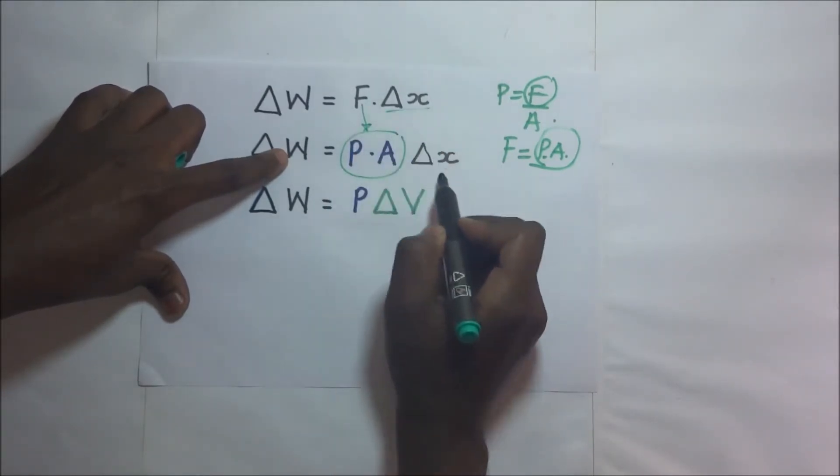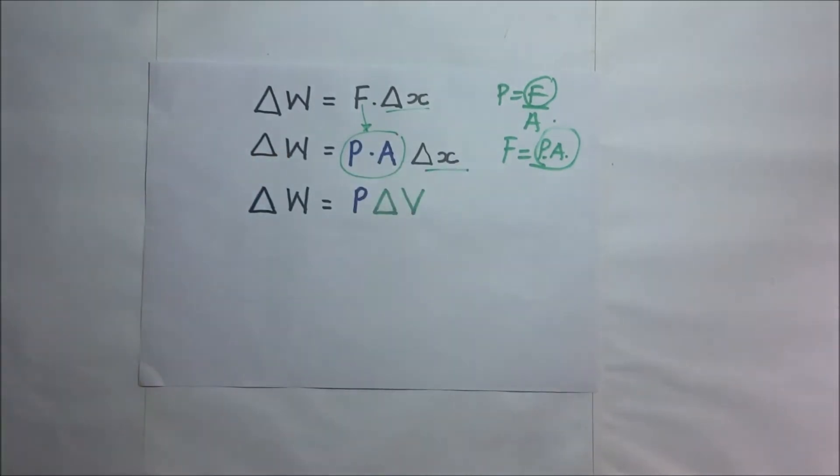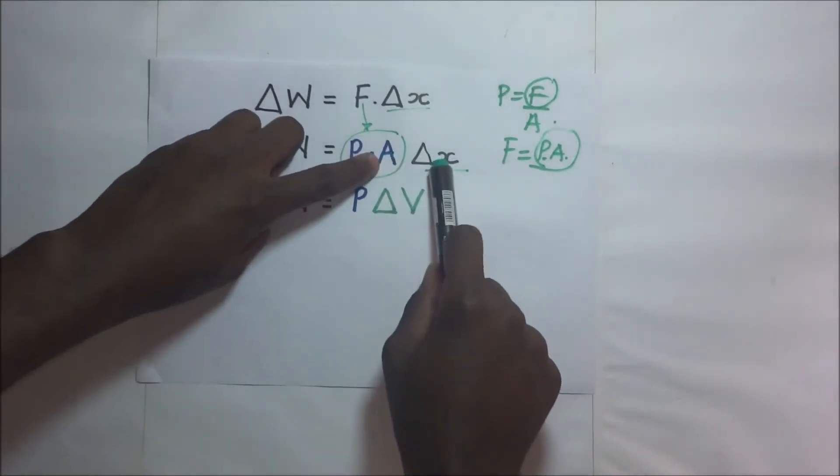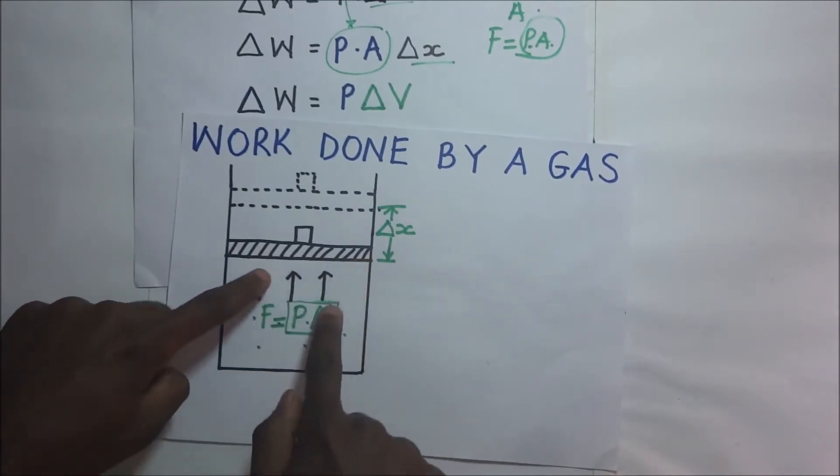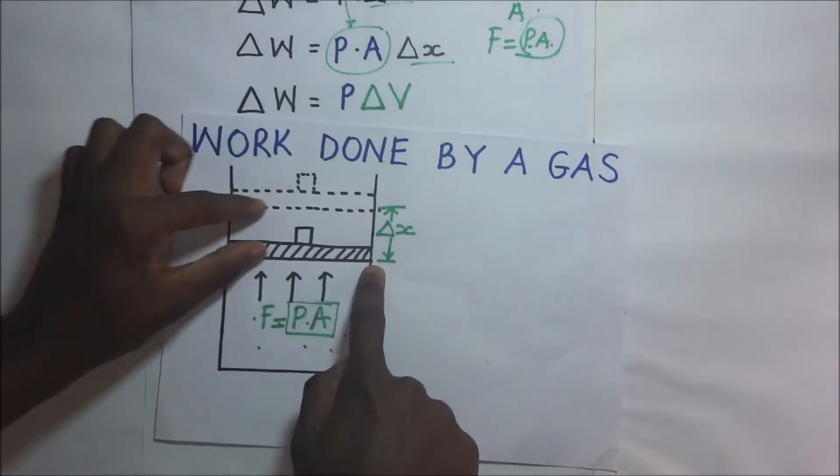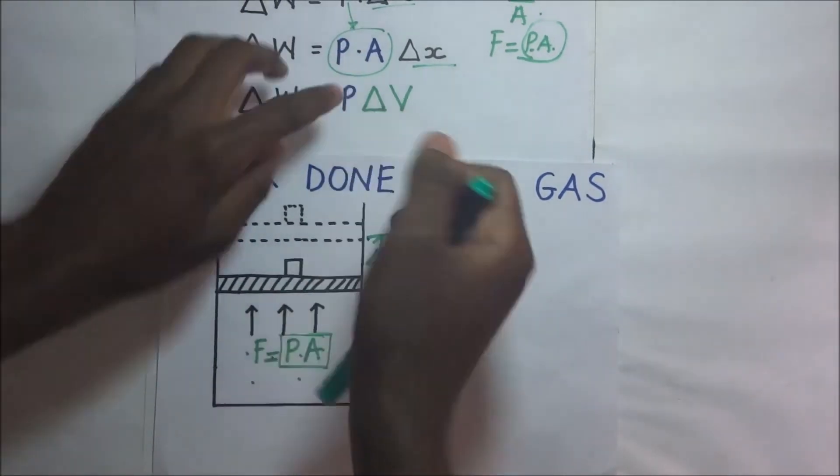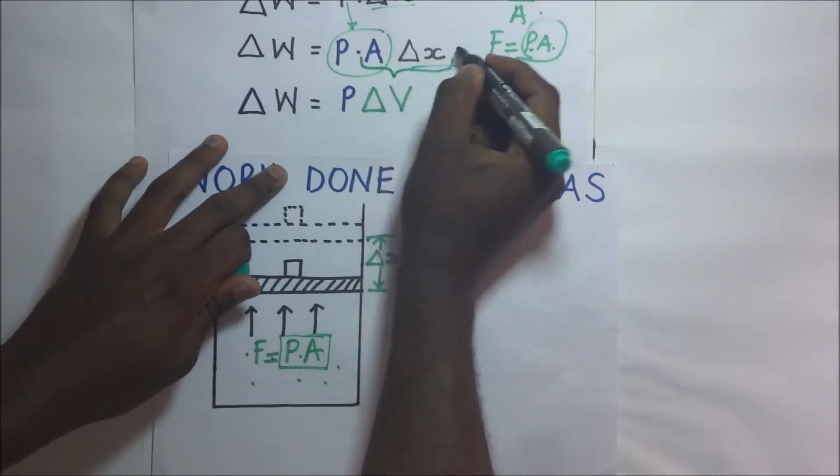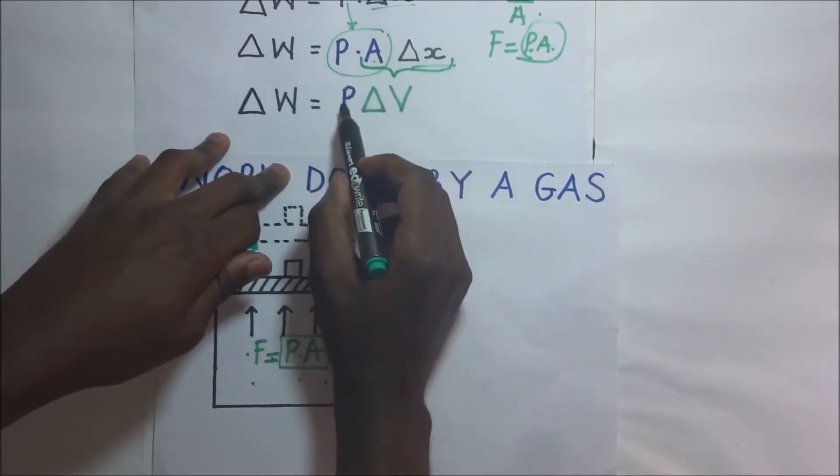Times the small change in X. And if you look at this expression, area times X—by area we mean the area of this cross section—multiply that by X gives us the volume of that portion. Area times small change in X gives us a small change in volume. So it's P times ΔV. So ΔW or delta W is going to be equal to the pressure times change in volume.